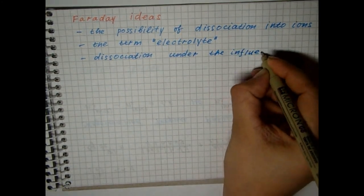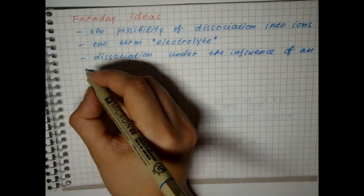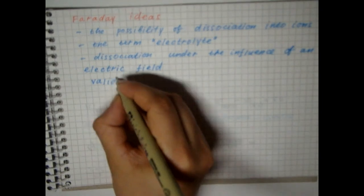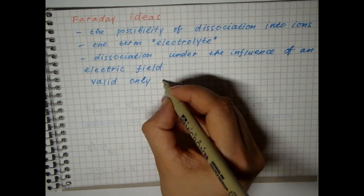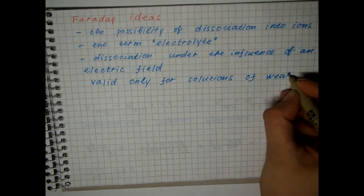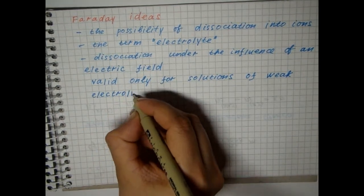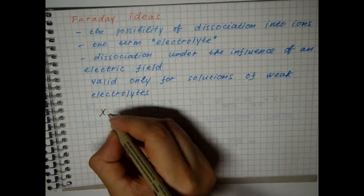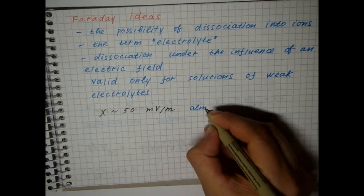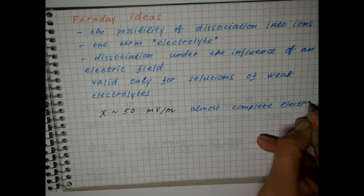In the end, it turned out that Faraday's views are valid for solutions of weak electrolytes. For example, at a field strength of 50 mV per meter, the dissociation of a weak electrolyte becomes almost complete.